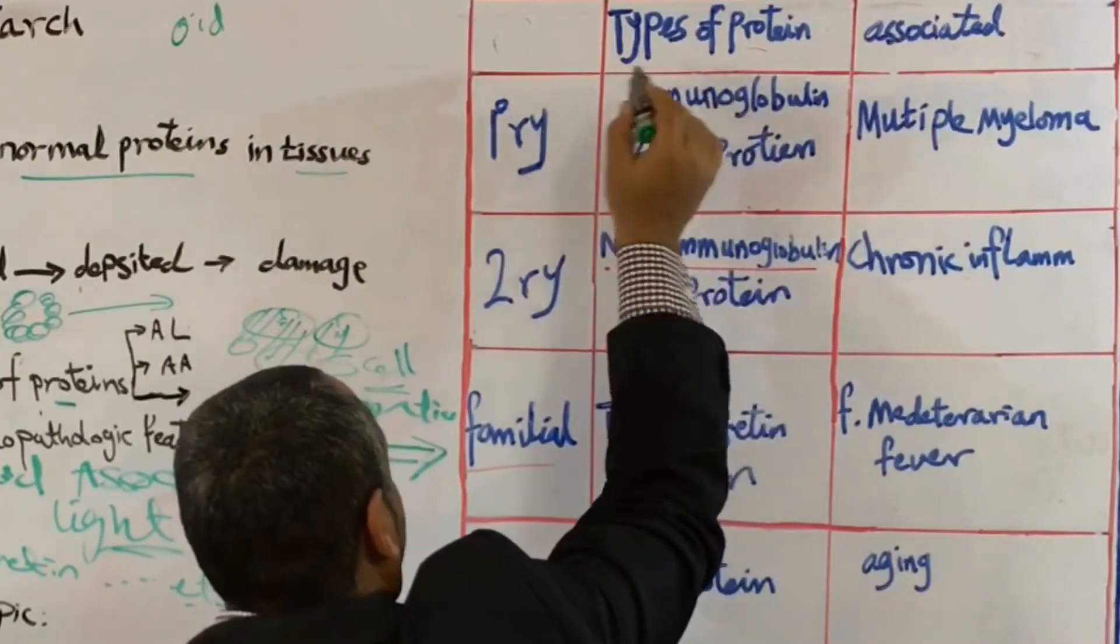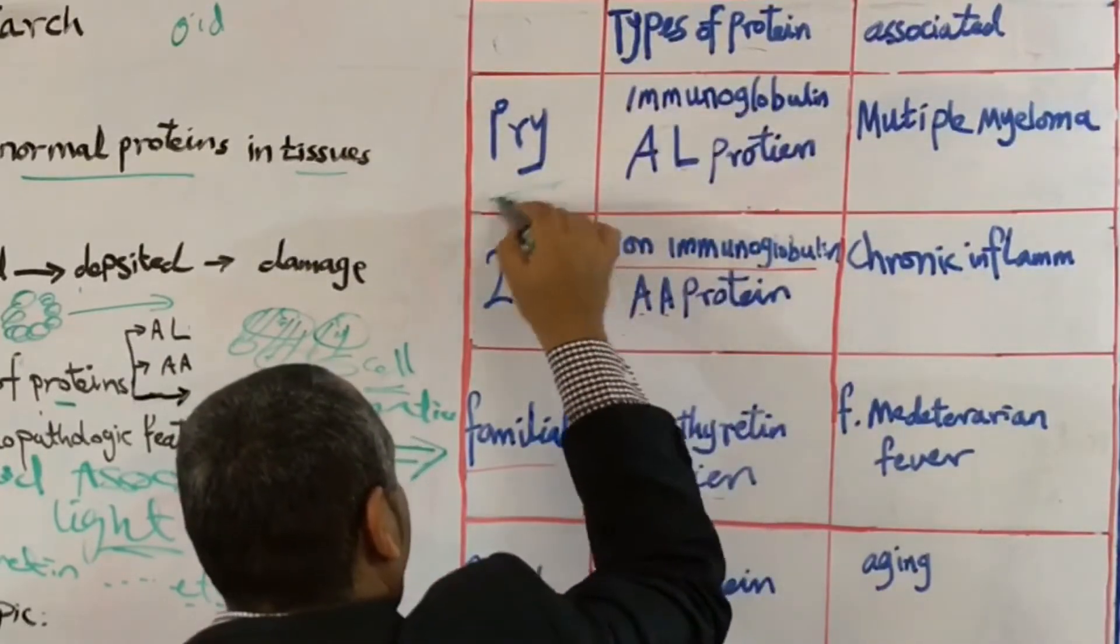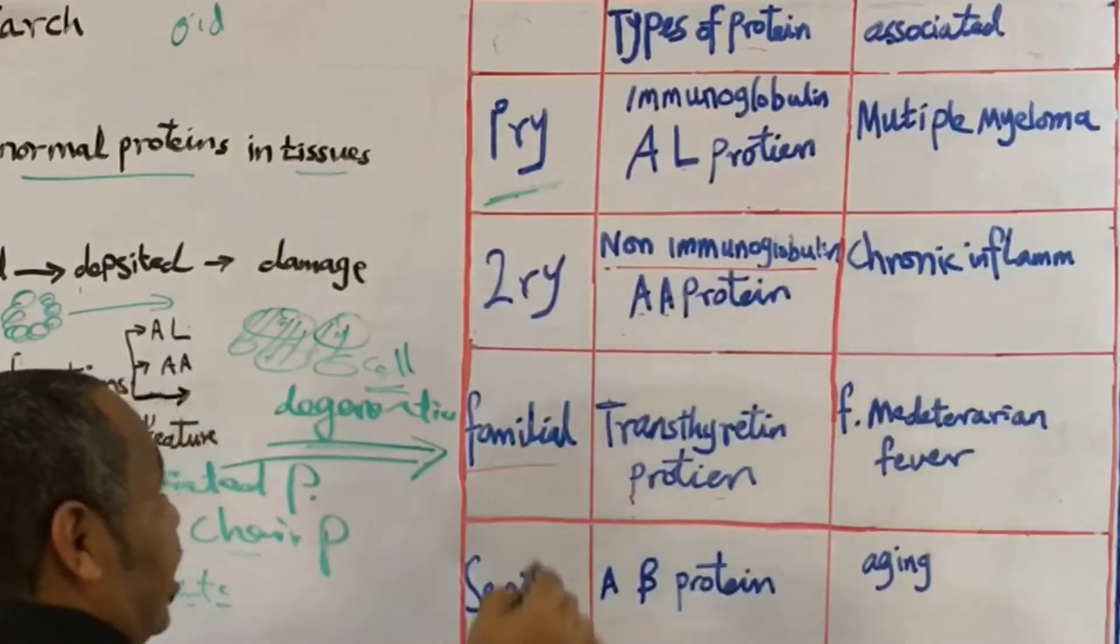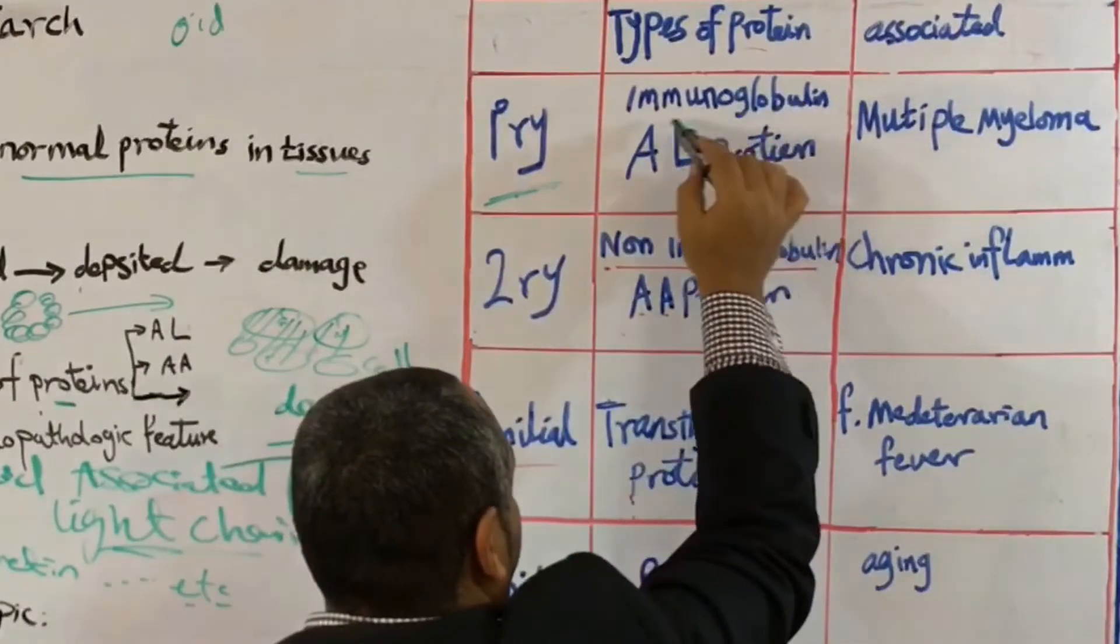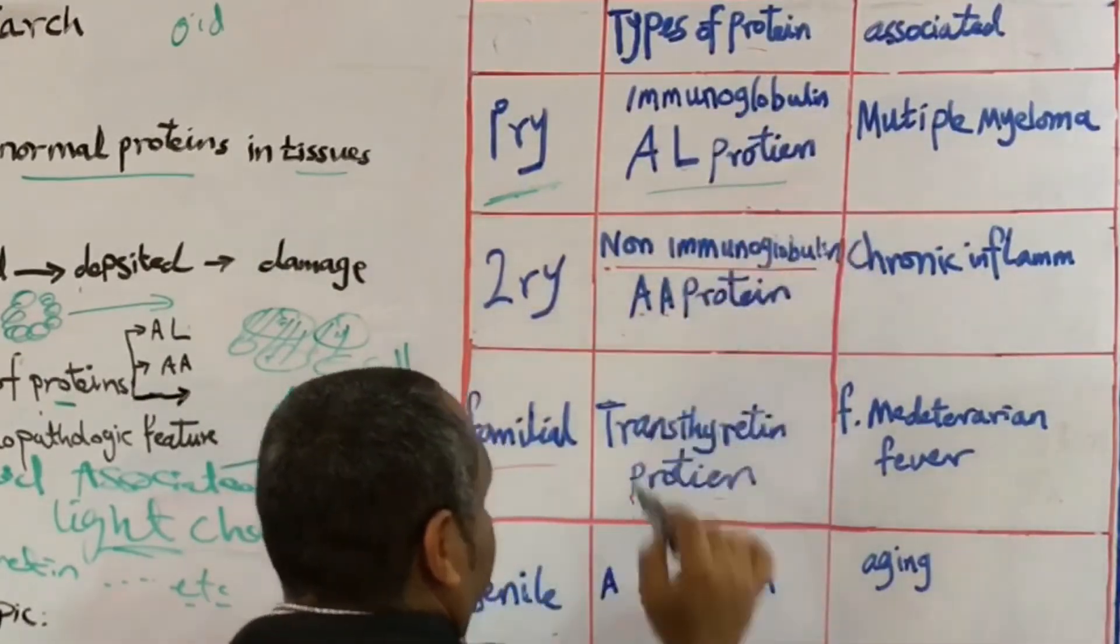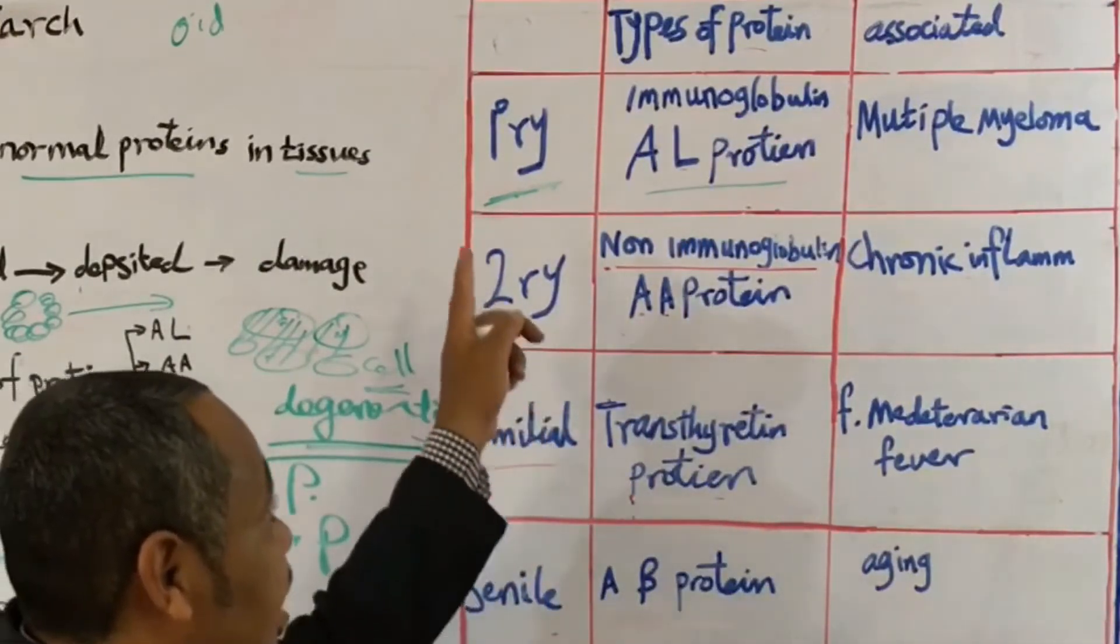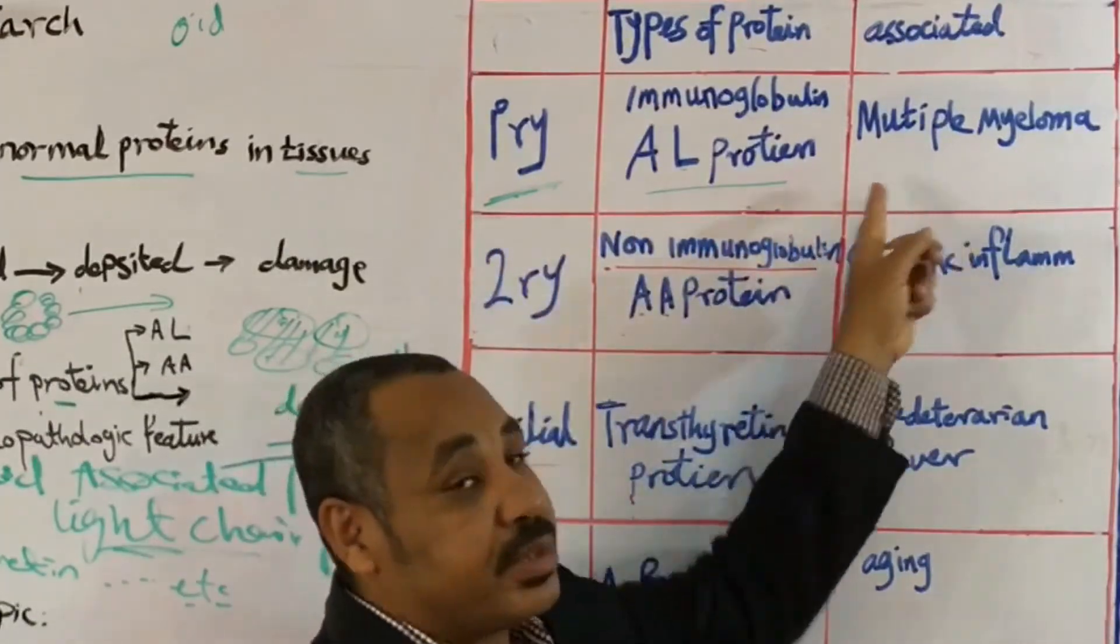Into primary amyloidosis, as you see here, in which there is immunoglobulin light chain protein. And actually we'll find this type of amyloidosis in multiple myeloma.